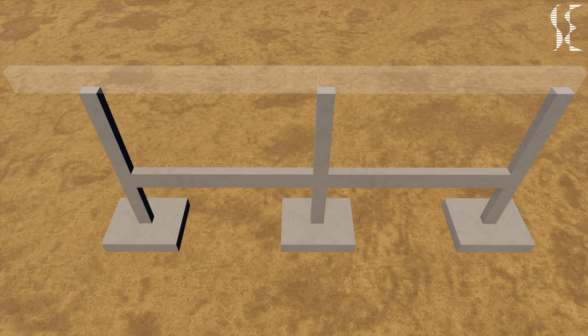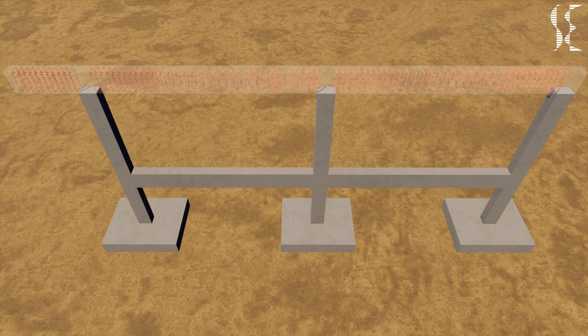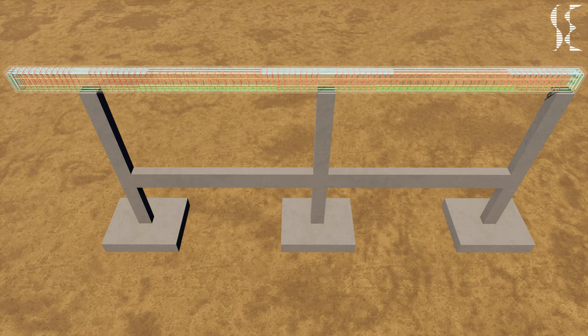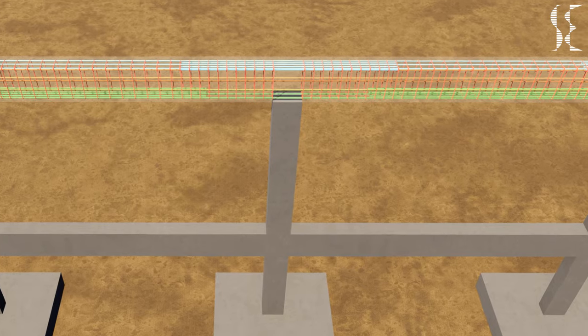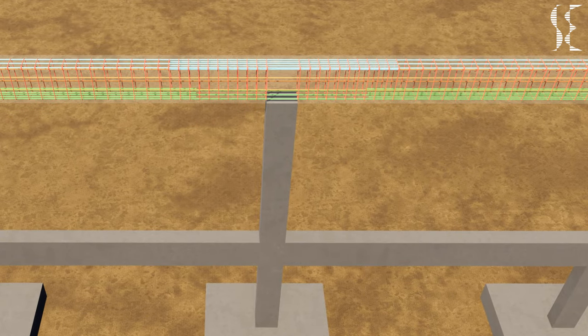In multi-span or continuous beam, we have similar kind of arrangement for bottom reinforcement, top reinforcement, side-face reinforcement and stirrups as in single-span beam except for the intermediate junction where top and bottom reinforcement are extended in adjacent spans.